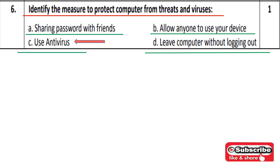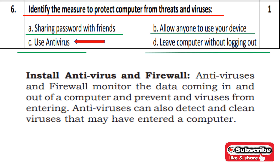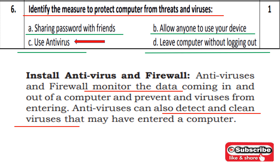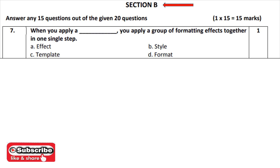Option D is leaving without logging out. When we open our email ID, we should always log out so no other person can log in. Antivirus and firewall work by monitoring data that comes to our computer and preventing viruses from entering. Antivirus also detects viruses that have already entered the computer and cleans them. So the correct solution is option C — use antivirus.